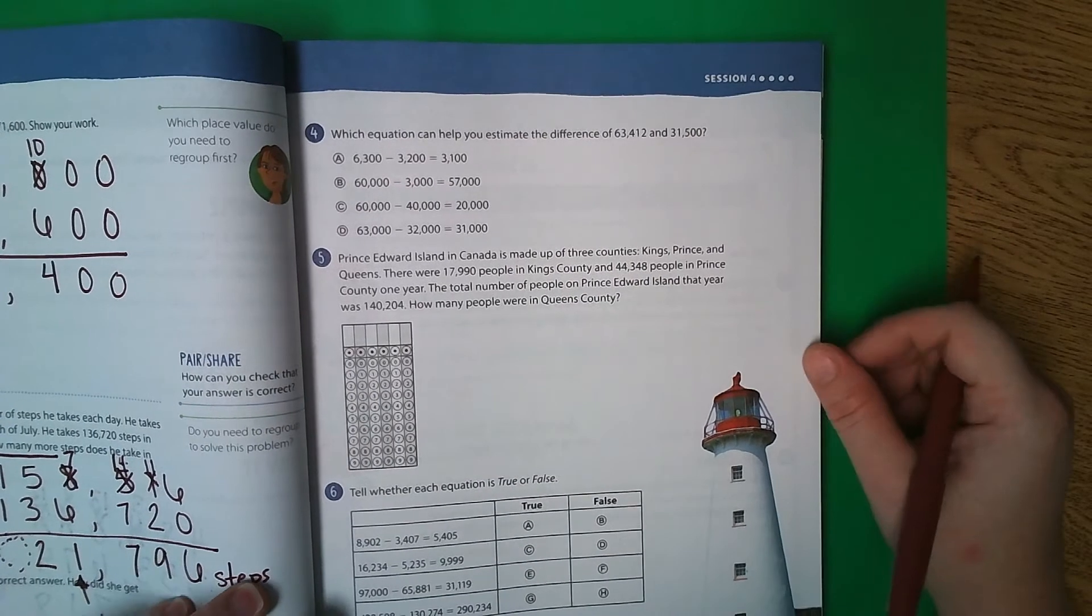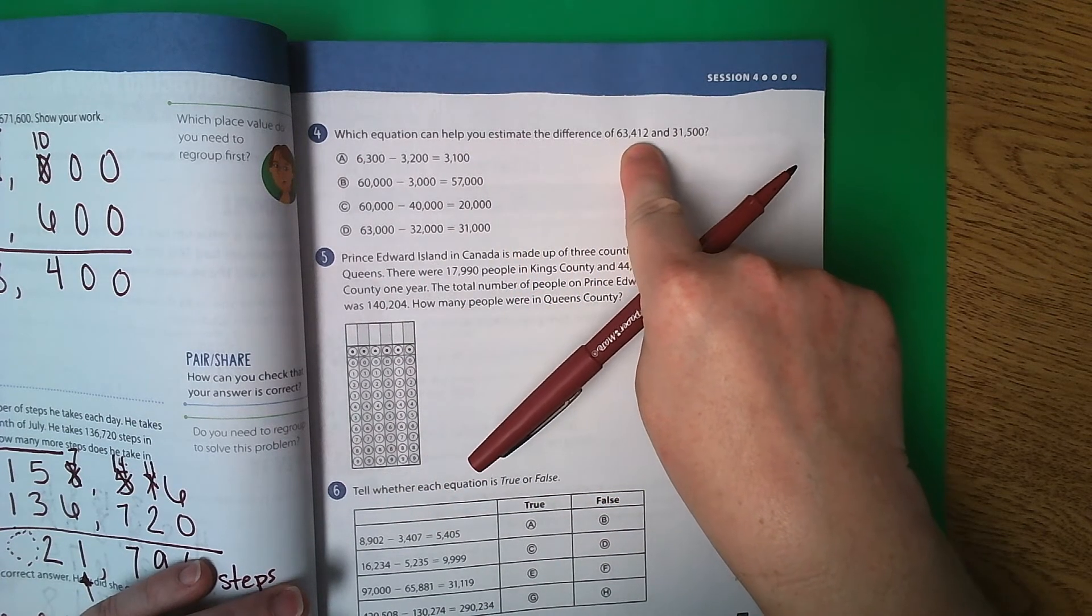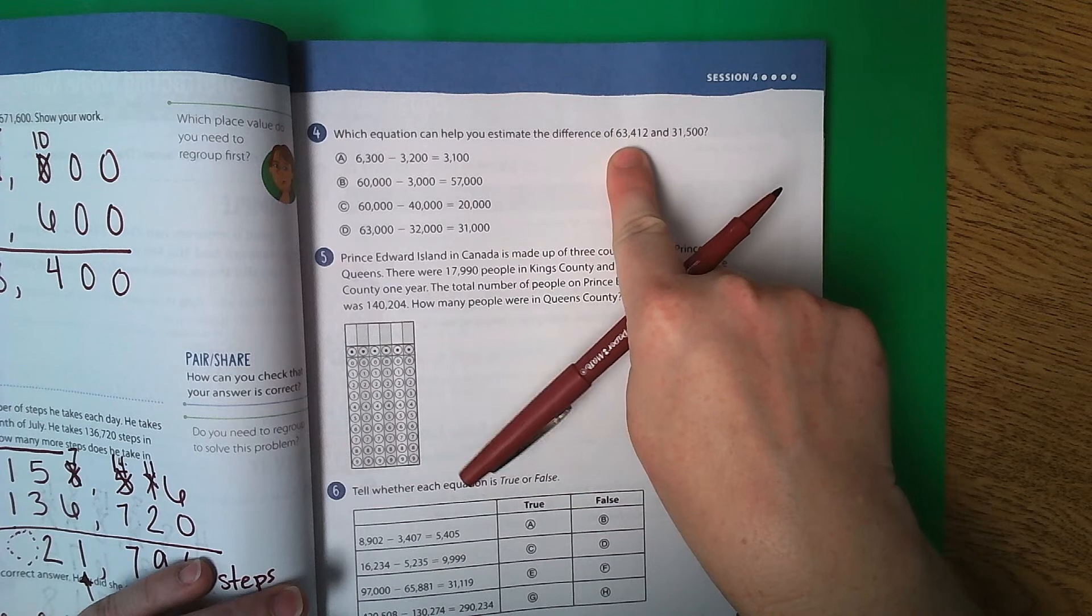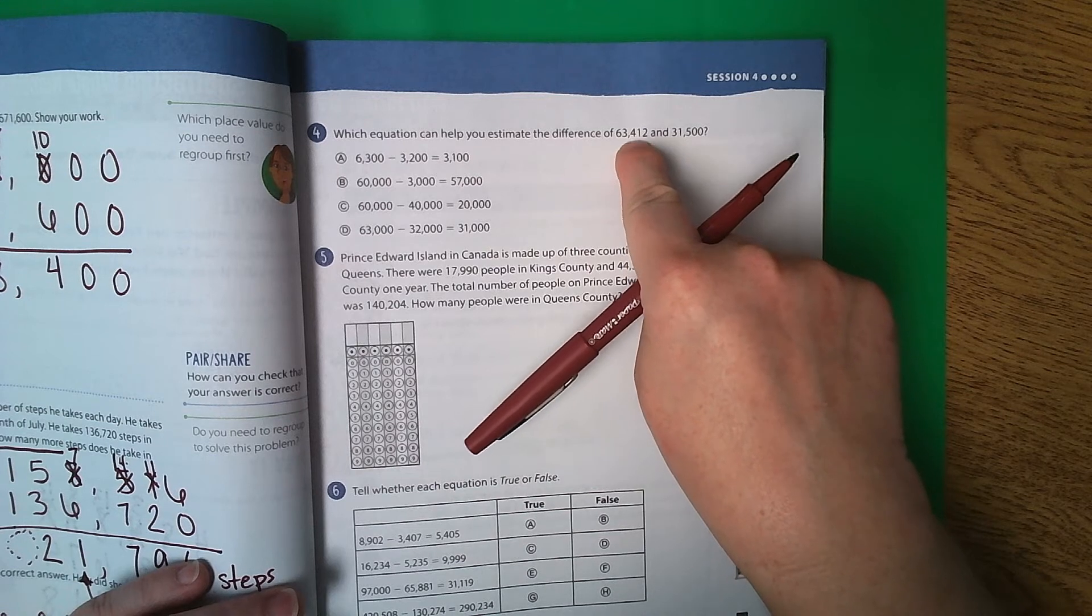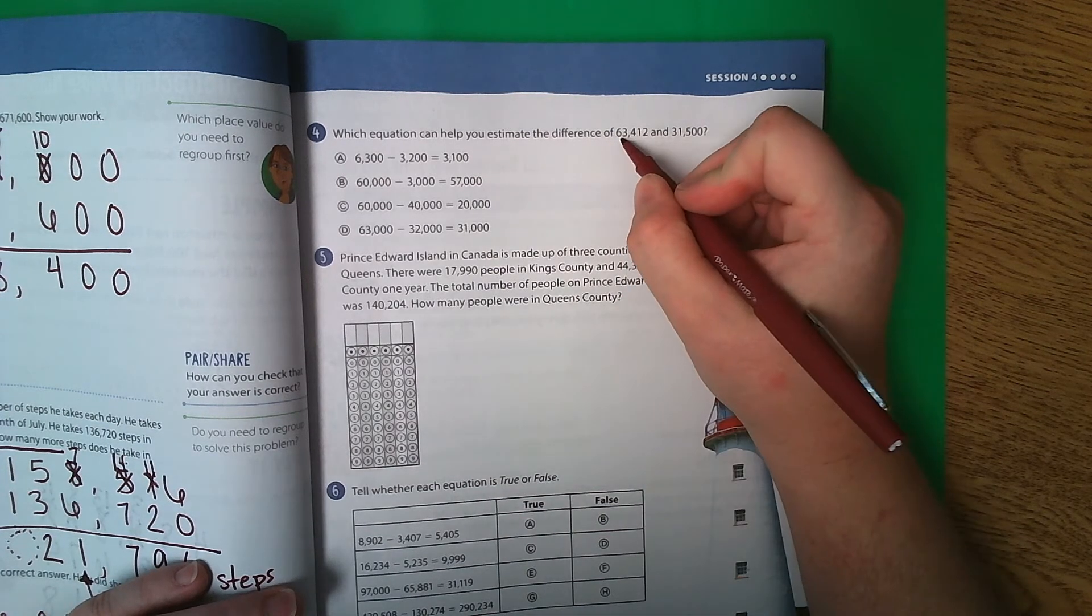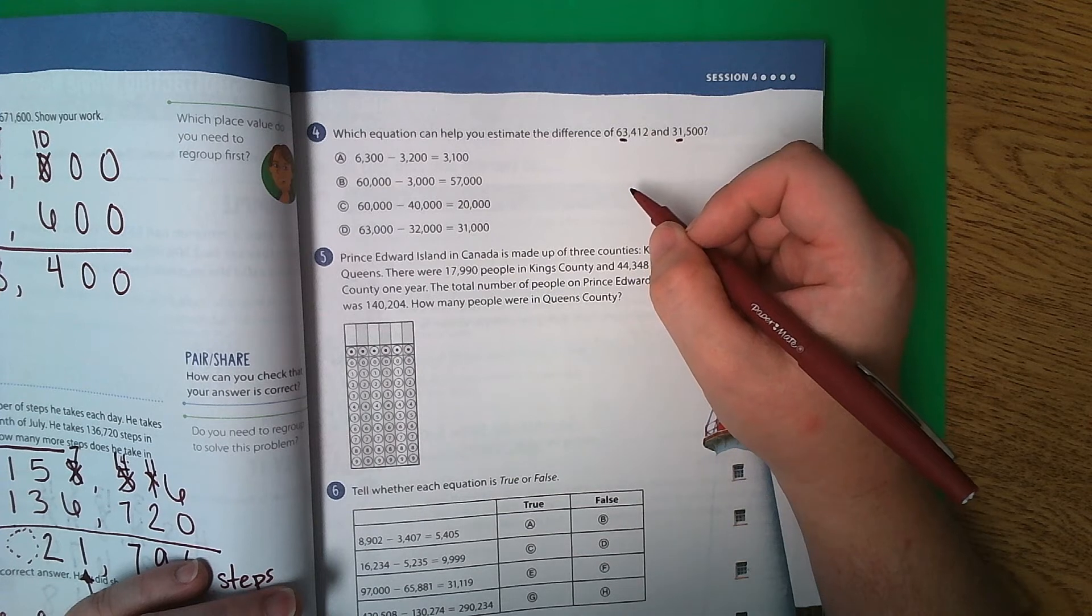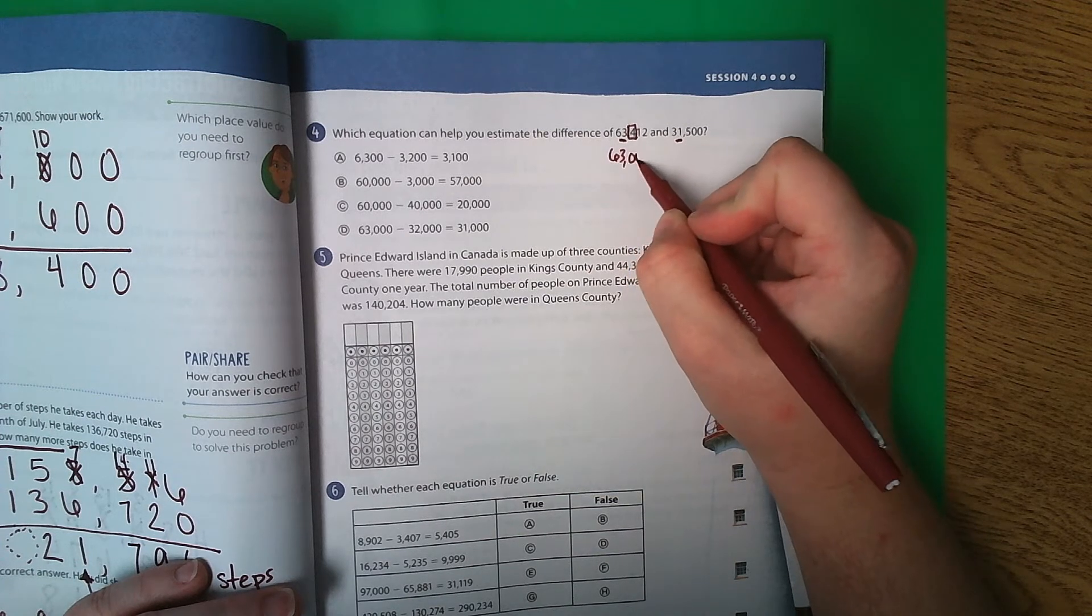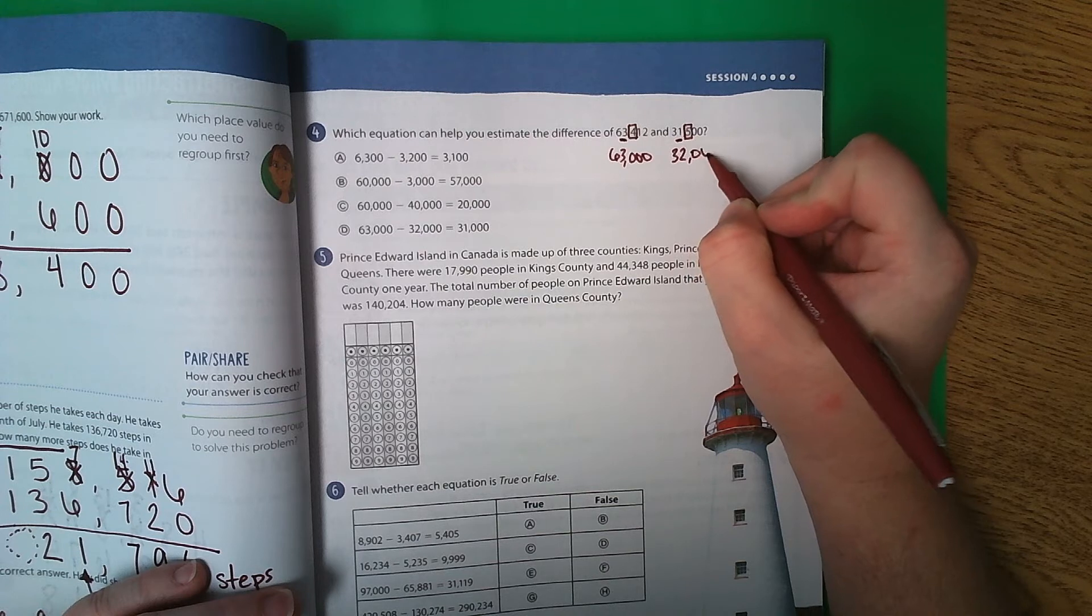Now we're moving on to page 89. Number 4 on page 89. Which equation can help you estimate the difference of 63,412 and 31,500? Well, let's go ahead and take a look at these. If you were to round 63,412, where would you round this number to? I would say probably the thousands place would be a good place to start. So the 3, we look next door at the 4, which says stay the same. So this one would be 63,000. The 1, we look next door at the 5. 5 says go up. So that would be 32,000.